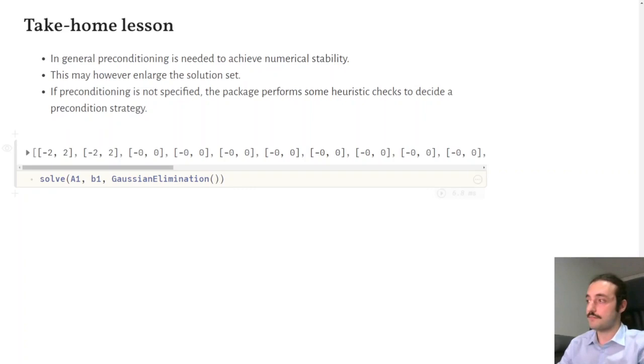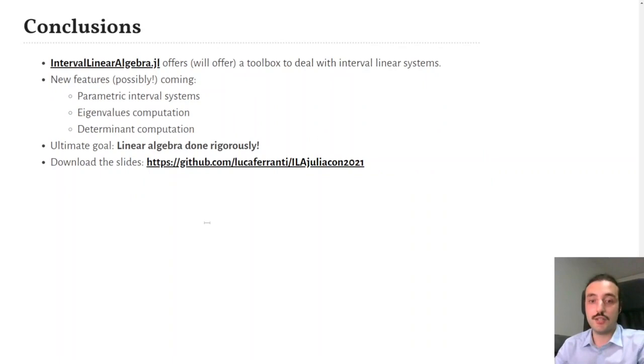So, conclusions. In this talk I showcased IntervalLinearAlgebra.jl and what it can do at the moment, which is solve interval linear systems. Hopefully, there will be some new features coming soon, like parametric interval linear systems, eigenvalue problems, and so on, and we'll reach the ultimate goal, which is linear algebra done rigorously. Thank you for listening. If you want, you can download the Pluto notebook from this link. It also has the link to the package. I hope you enjoyed the talk and enjoy the rest of JuliaCon.